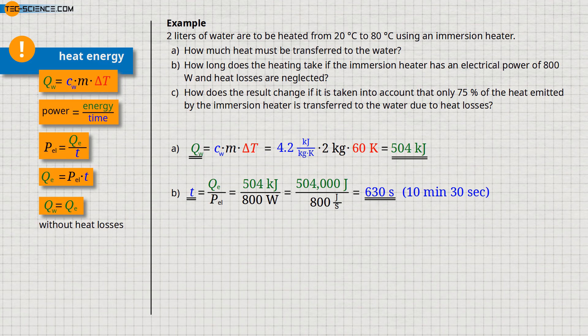For example, the heating power of the immersion heater is also used to heat the vessel. In addition, heat also penetrates through the vessel and thus heats up the floor on which it stands, as well as partially the surrounding air. These unwanted heat flows, which ultimately do not contribute to the actual heating of the water and are therefore not transferred to the water, are referred to as heat losses.